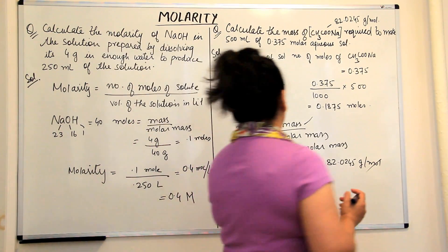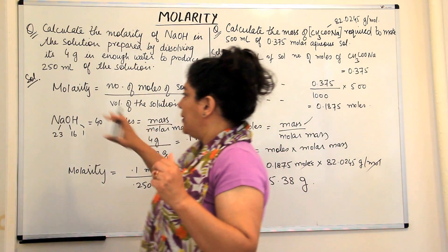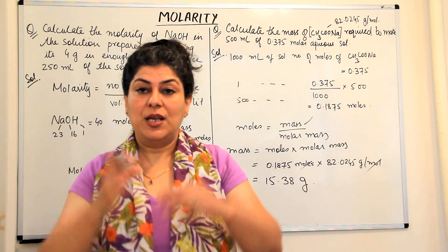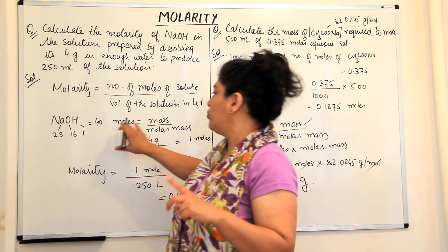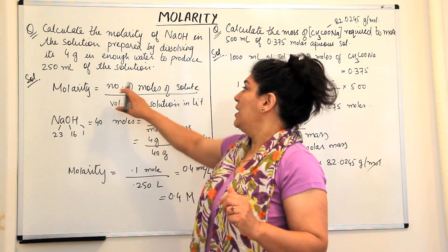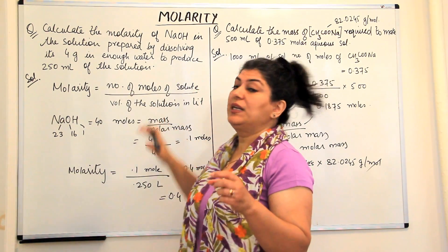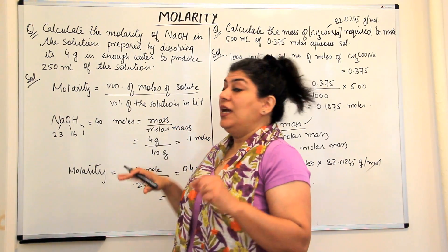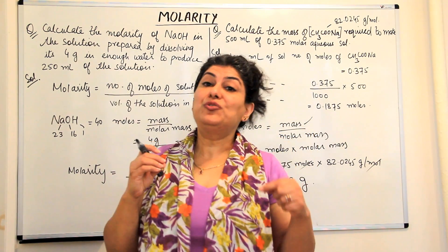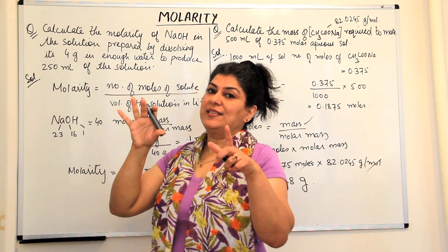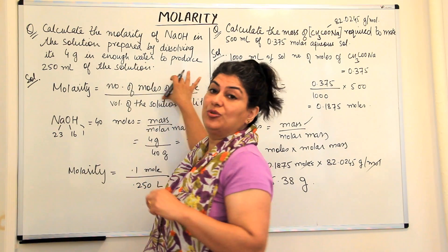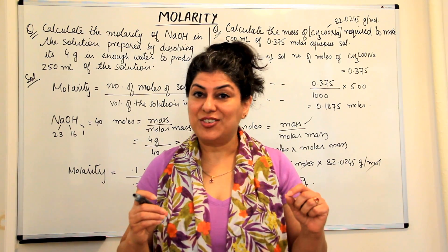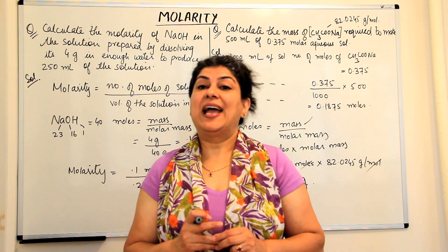This is how you calculate the mass of the compound. For molarity questions, always remember the basic equation. Identify what quantities are given and what is asked. Use moles = mass ÷ molar mass, and molarity = moles ÷ volume in liters. If volume is in milliliters, convert to liters. If density is given, use density = mass ÷ volume to find volume. Solving numericals is easy — all you need is practice. In the next video I'll solve more problems on molality.